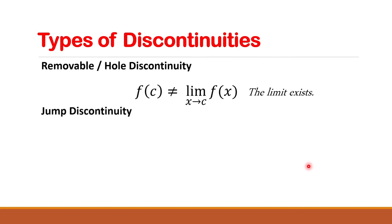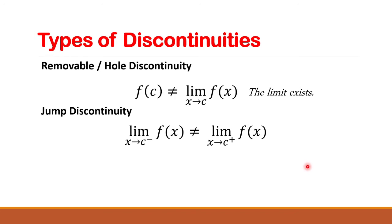Jump discontinuity occurs when the limit of the function as x approaches c from the left is not equal to the limit of the function as x approaches c from the right. In this case, the limit does not exist.